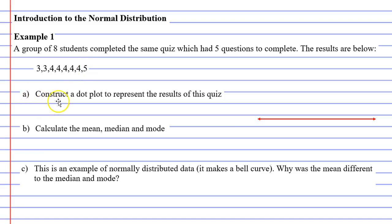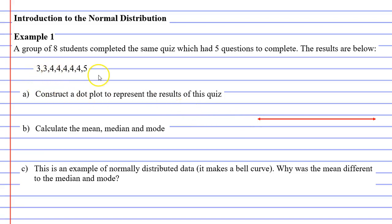Question A says: construct a dot plot to represent the results of this quiz. I've drawn a line to the right here, and I really just need the numbers 3, 4, and 5 — that's all you really have to do.